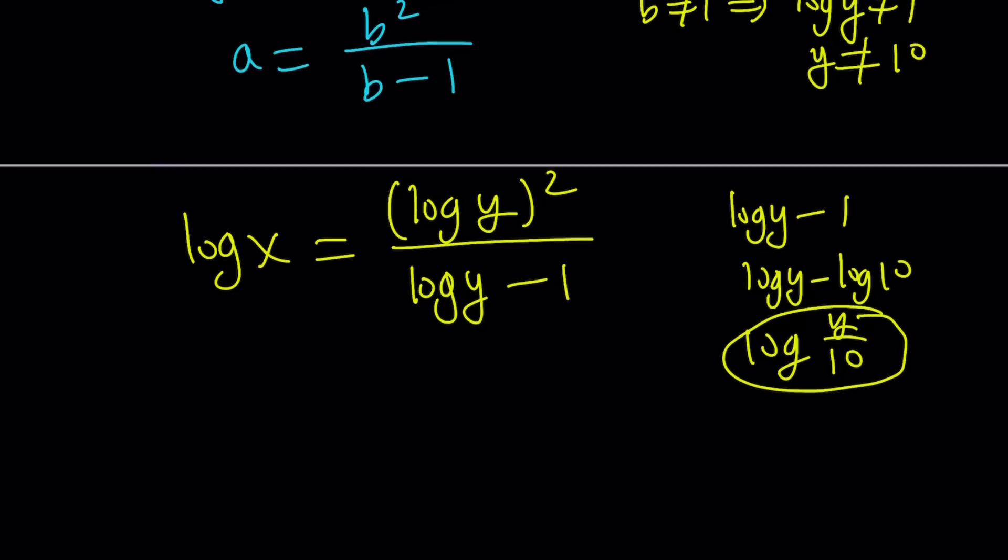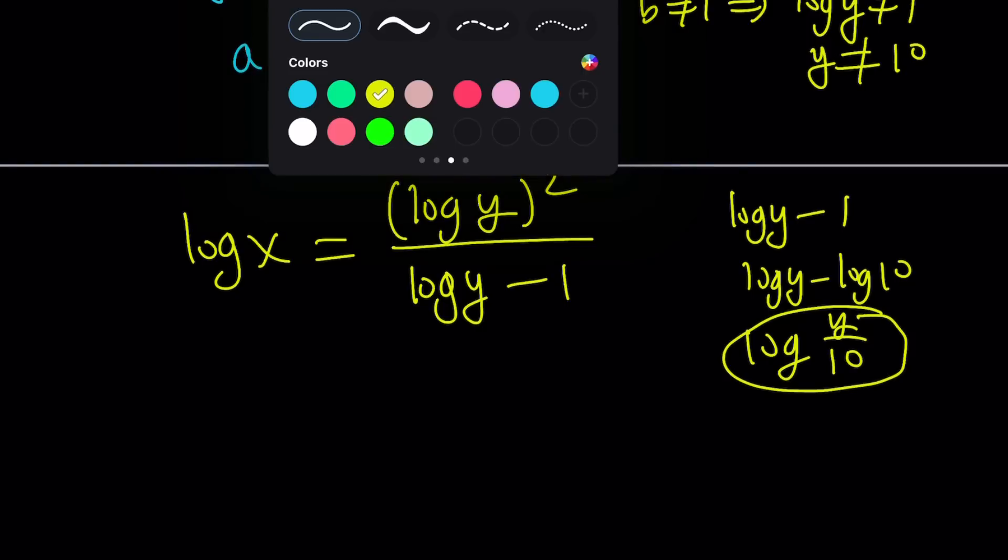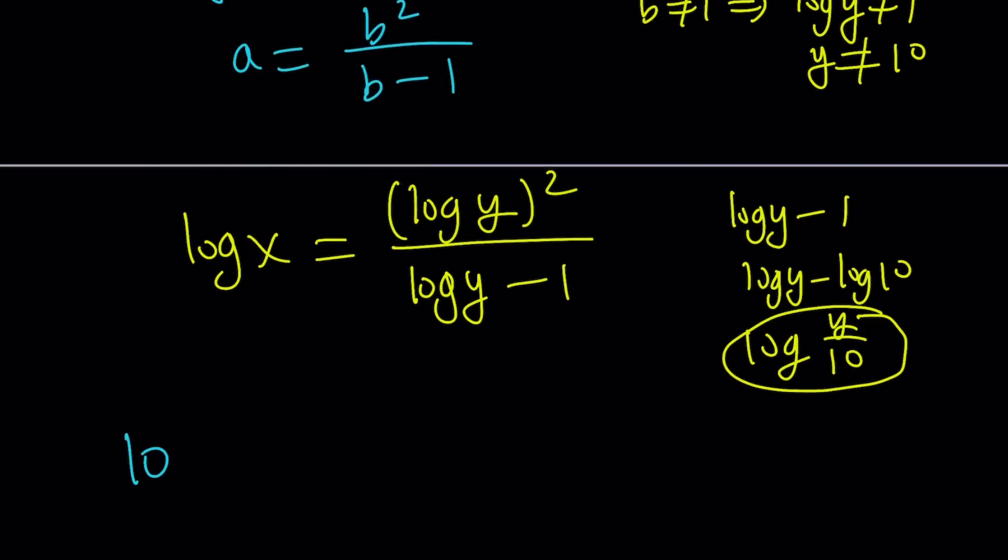Anyways, we got log x, but we want to isolate the actual variable x. So in order to be able to do that, we can use the identity 10 to the power log x equals x, right? Because when the bases are equal we get the argument, which is x in this case. That property in general looks like this: b to the power log a with base b equals a. So these bases kind of cancel out. That's actually the definition of the logarithm.